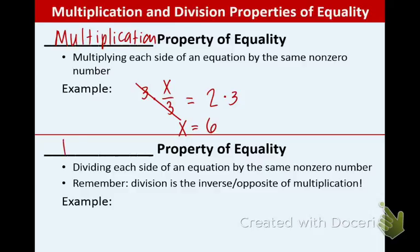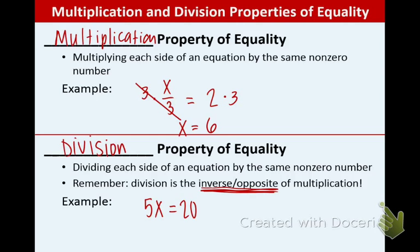The division property is the last one — we divide each side of an equation by the same number, and it should not be 0 because dividing by 0 is a no-no. Remember, division is the inverse or opposite of multiplication. Example: 5x equals 20. When you don't see an operation between two values, assume it's multiplication. We divide both sides by 5, cross out the 5s, and x equals 4.